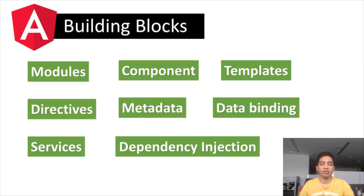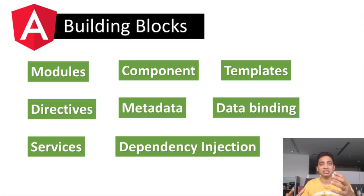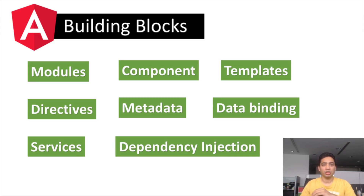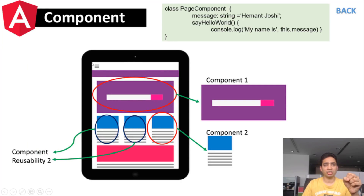Components are the major building block of any Angular application. Each component consists of a class where you define the component's application logic using methods and properties — it is the centerpiece of your Angular application. It connects to your directives, metadata, and templates. Each module can have many different components, and all these components work together to create the application.